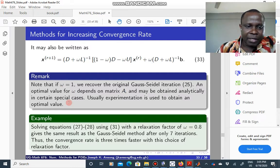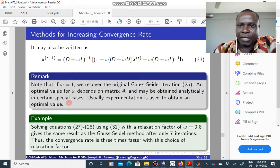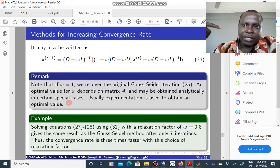Solving the same problem that we solved using the Jacobi and using the Gauss-Seidel. Remember, when we used the Jacobi method, we got our solution after about 28 iterations. Then we improved on Jacobi and used Gauss-Seidel, and we had to iterate for 22 times, 22 iterations before we got the solution.